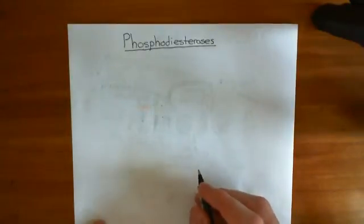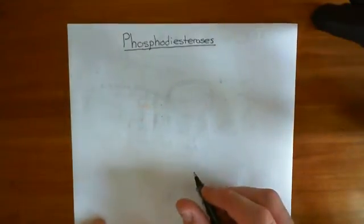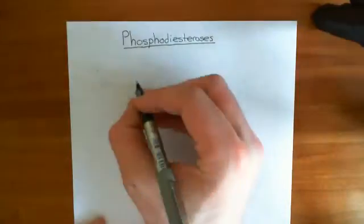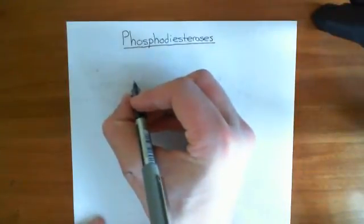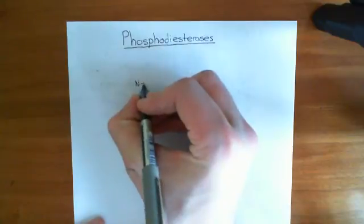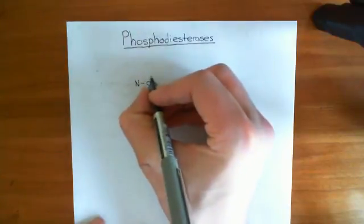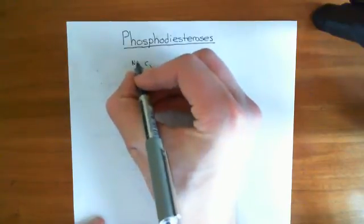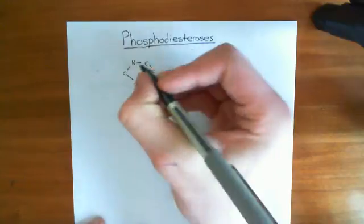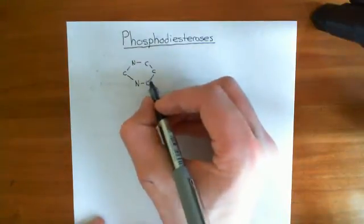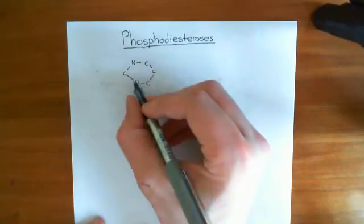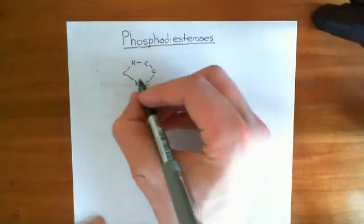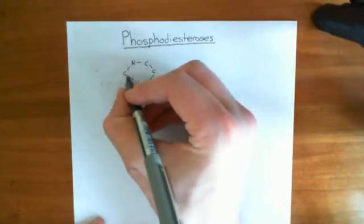Let's revise the structure of cyclic AMP. The most difficult part is remembering the structure of the organic base adenine. It contains a six-membered ring called a pyrimidine ring. A pyrimidine ring is just like benzene, except that two of the carbons have been replaced by nitrogens, and they have to be in specific positions — with a single carbon in between them.